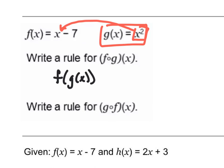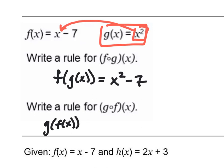To find f(g(x)), I take x² and plug it in for x in f(x) = x − 7. That gives me x² − 7. Now for g(f(x)): my input is function f, which is x − 7. I plug that into g(x) = x². So g(f(x)) = (x − 7)².